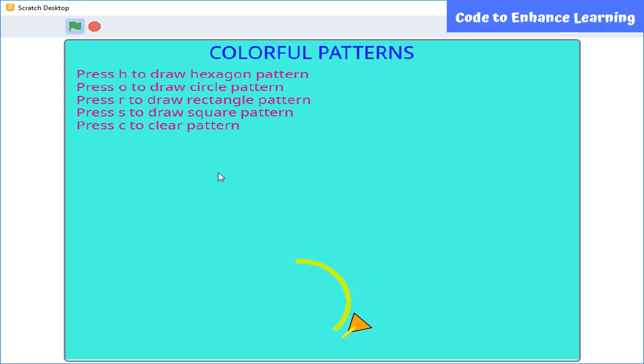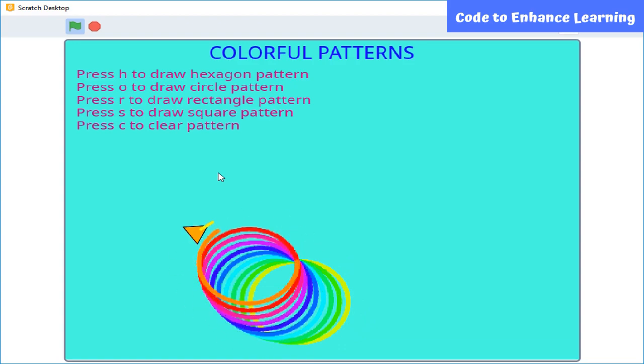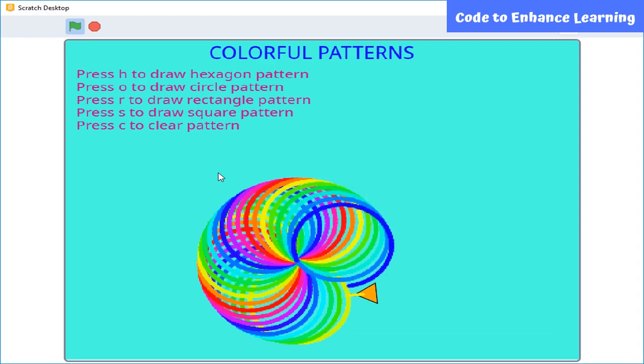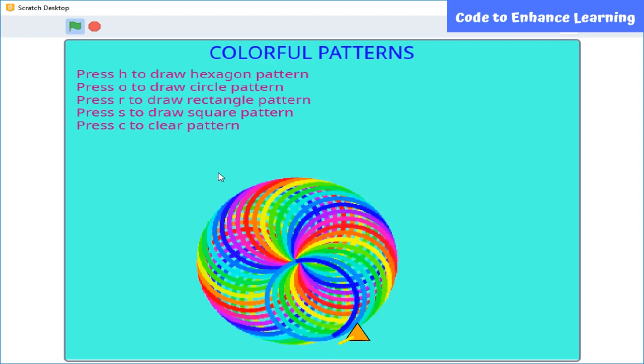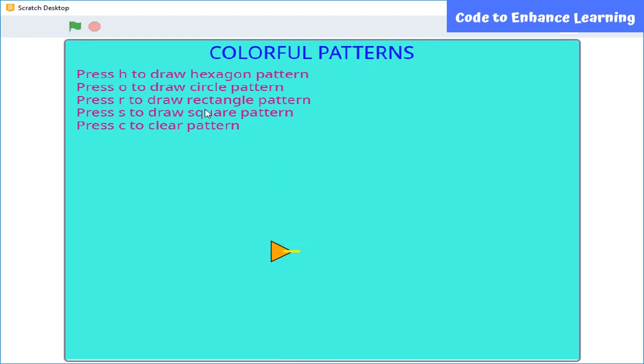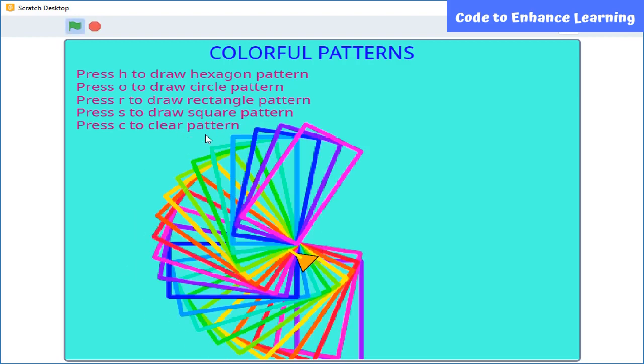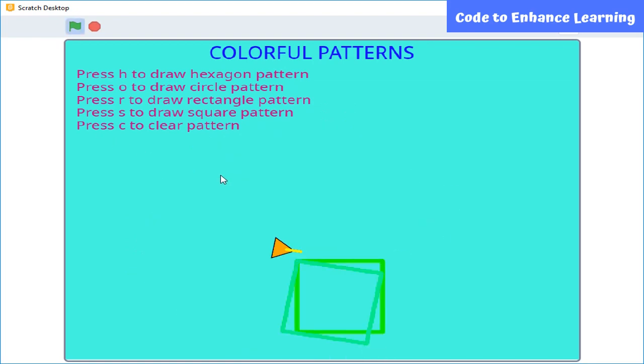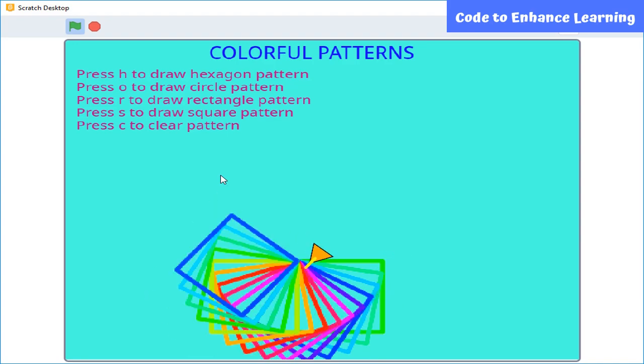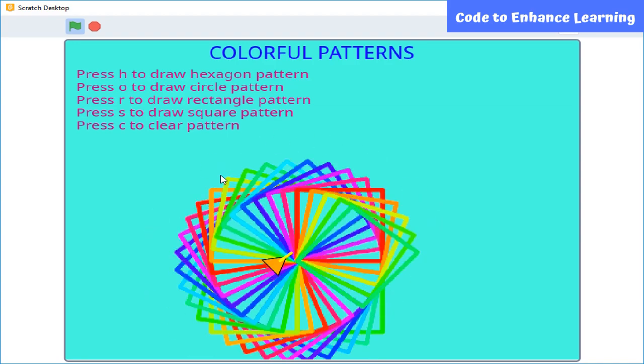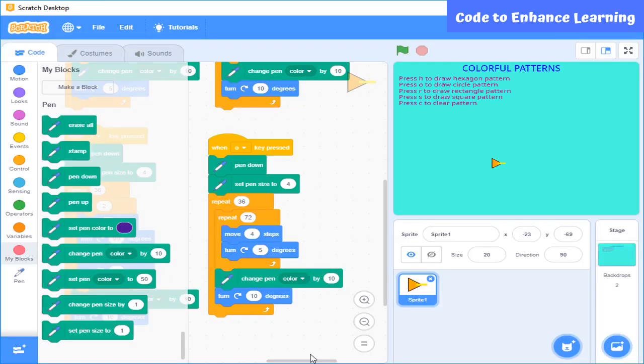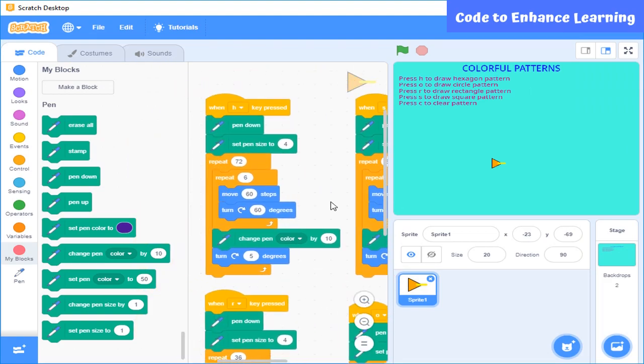Press O to draw a circle pattern. Press R to draw a rectangle pattern. And press S to draw a square pattern. So this is the code to make various colorful patterns using Scratch programming.